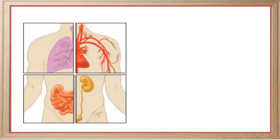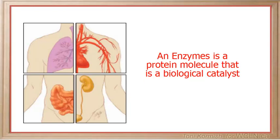A living system controls its activity through enzymes. An enzyme is a protein molecule that is a biological catalyst with three characteristics.